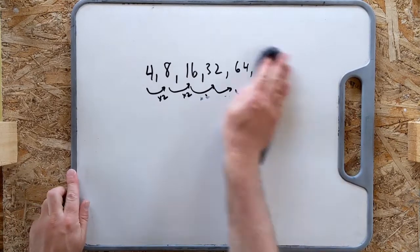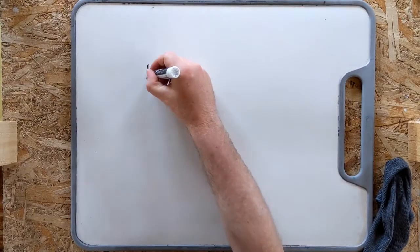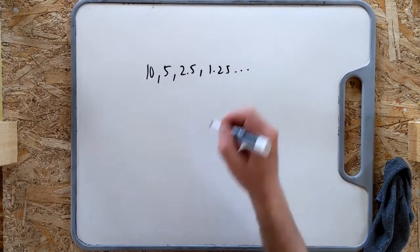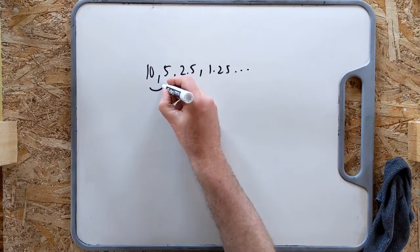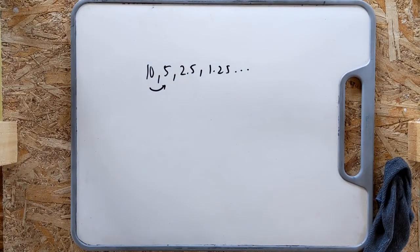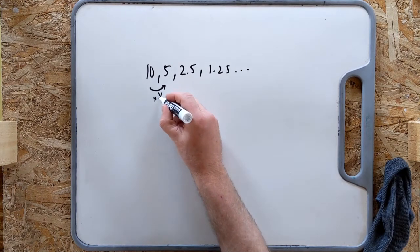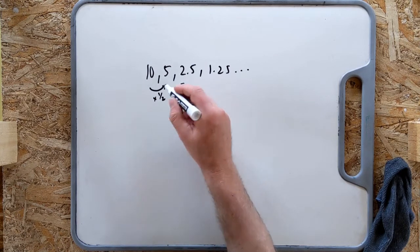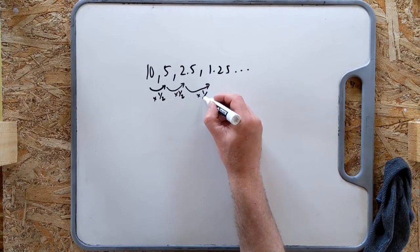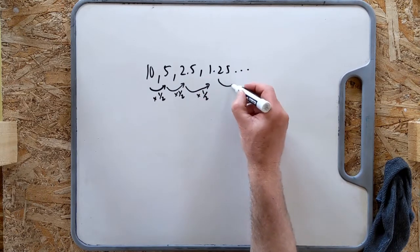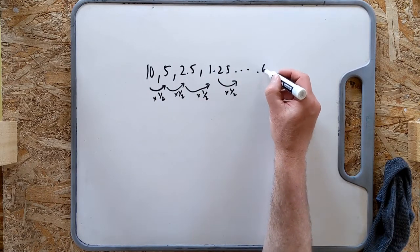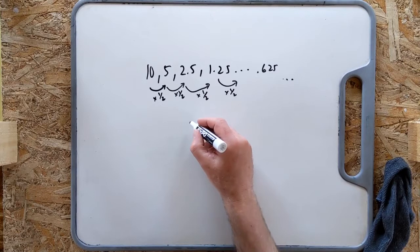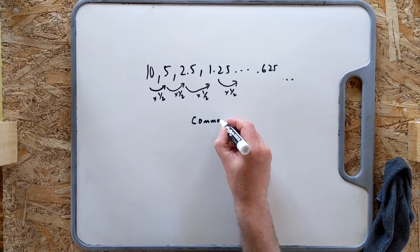Here's another example: 10, 5, 2.5, 1.25, dot dot dot. In this case, you are multiplying by a number again. You can think of it as dividing by 2 or, more typically, multiplying by one-half. So 5 is half of 10, 2.5 is half of 5, 1.25 is half of 2.5. If I want half of 1.25, I get 0.625, etc. This multiplier — one-half in this case — is called the common ratio.